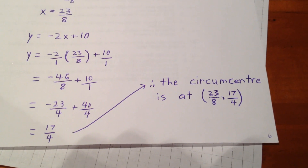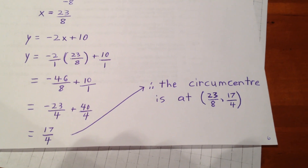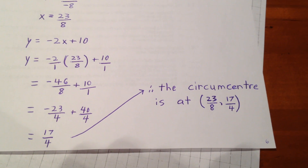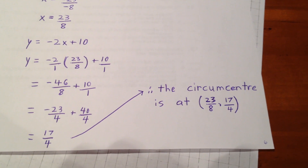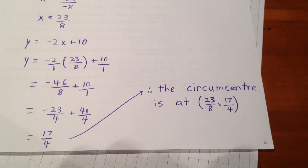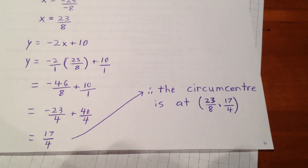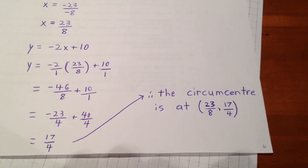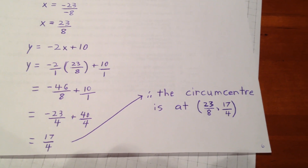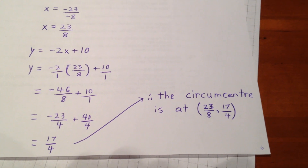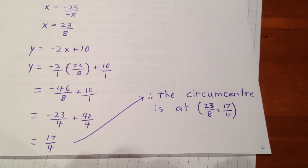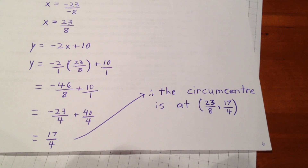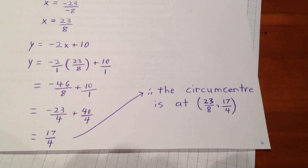In case you're wondering which two perpendicular bisectors to use — it doesn't matter. We could have used the perpendicular bisector of BC through its midpoint, and it would have intersected either of the other two in the same spot. That's one of the neat properties of triangles.